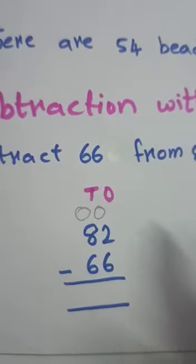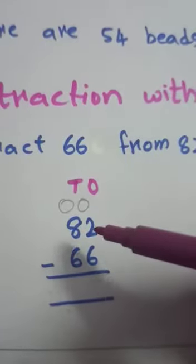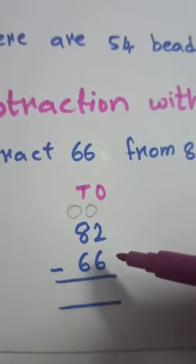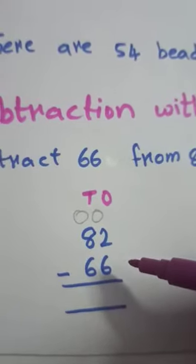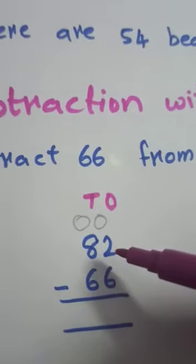Sometimes, what will happen when we are subtracting digits in the same place? When we are subtracting digits in the same place, we may not have enough ones. Can we subtract 6 from 2? No.